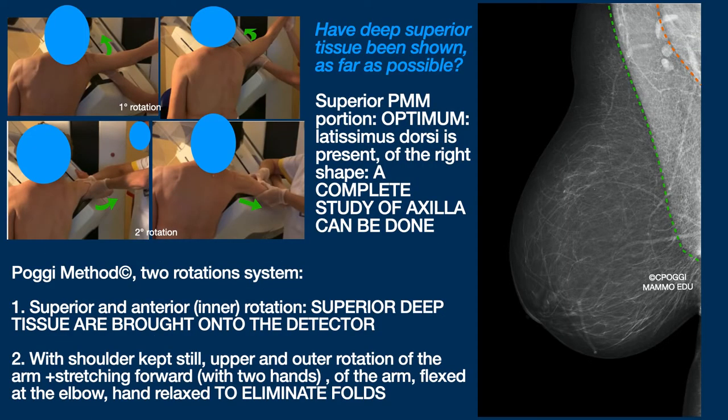In order to include the latissimus dorsi, you should perform this first rotation, according to my method, directed superiorly and anteriorly. Then, shoulder kept still, the second one, directed superiorly and this time posteriorly.